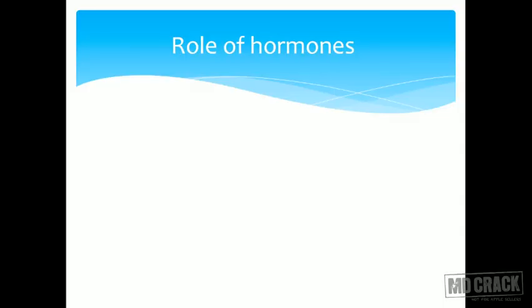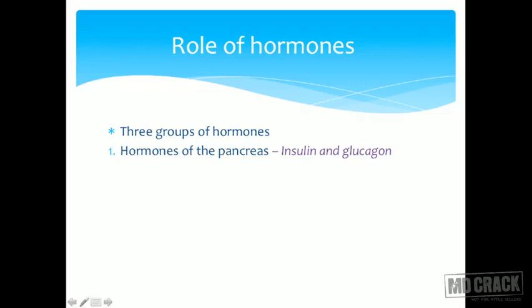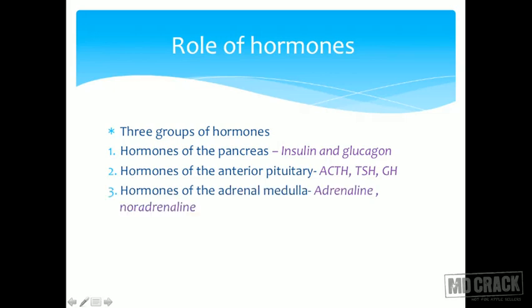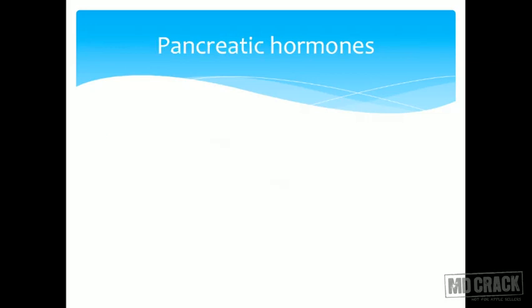Now, how is this regulated? There comes the role of different hormones within the body. There are basically three groups of hormones: the hormones of the pancreas — insulin and glucagon; hormones of the anterior pituitary — ACTH, TSH, and growth hormone; and hormones of the adrenal medulla — adrenaline and noradrenaline. These hormones are the ones important in regulating the integration between different metabolisms.